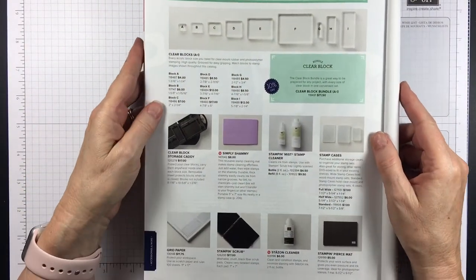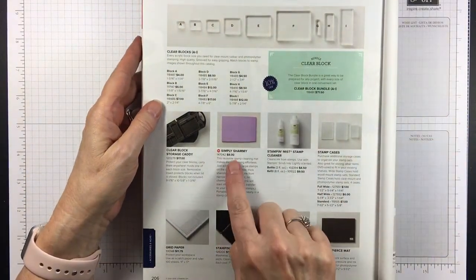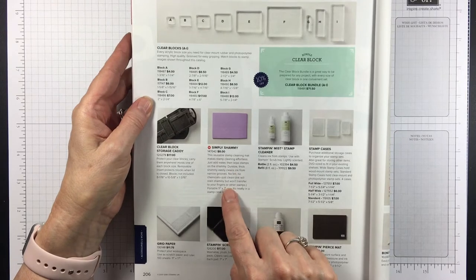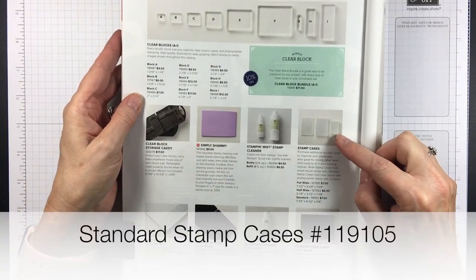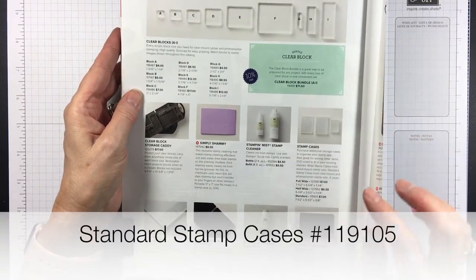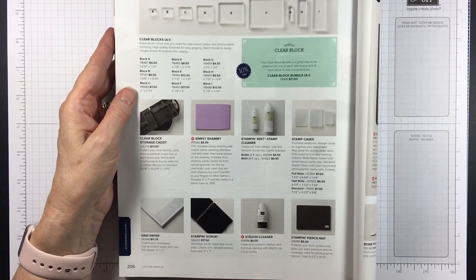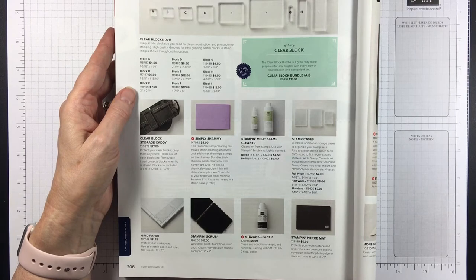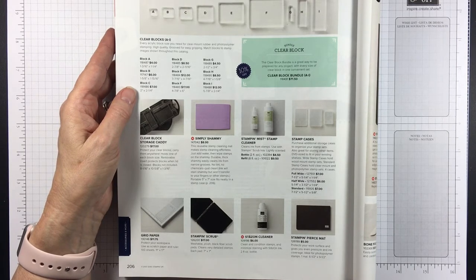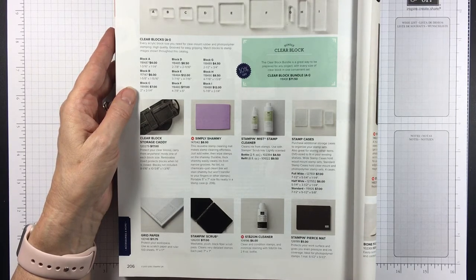Let me show you in the catalog where you'll find it. It's on page 206 and the Simply Chamois is right there. And then over here, you'll find our stamp cases and we have three different sizes and you would want the standard size. Now you do get four cases when you purchase it and you could use extras for embellishments or die cut pieces. Or if you get paper pumpkin, you could put your stamps inside there.